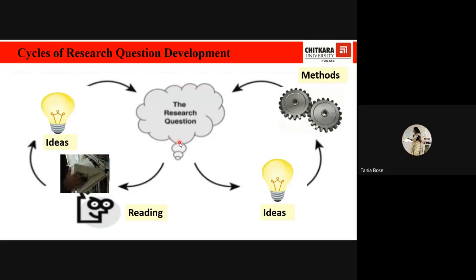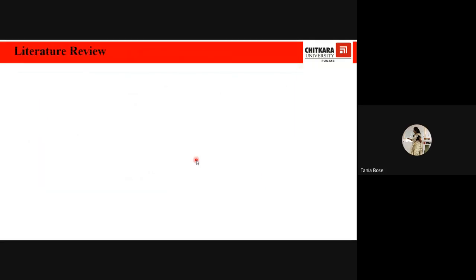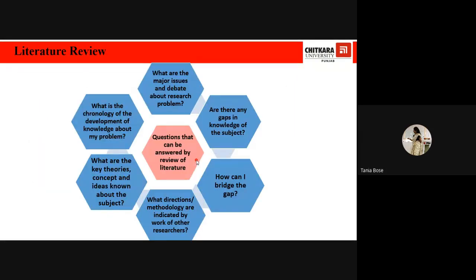The main thing in research is the research question. We get research questions through extensive reading, generating ideas from those readings, and pondering over the question. A good research question will point you towards the theory you need to explore, the literature you need to review, the data you need to gather, and the methods you need to use. Let's briefly discuss the literature review.